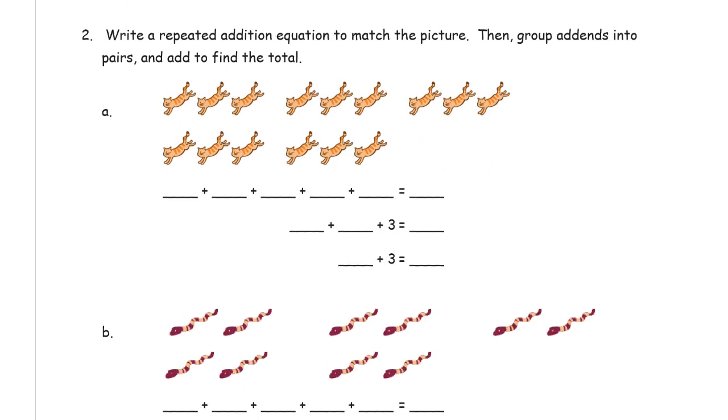Write a repeated addition equation to match the picture. Then group the addends into pairs and add to find the total. Very much like the same thing we've been doing. Except there's going to be a little left over here.